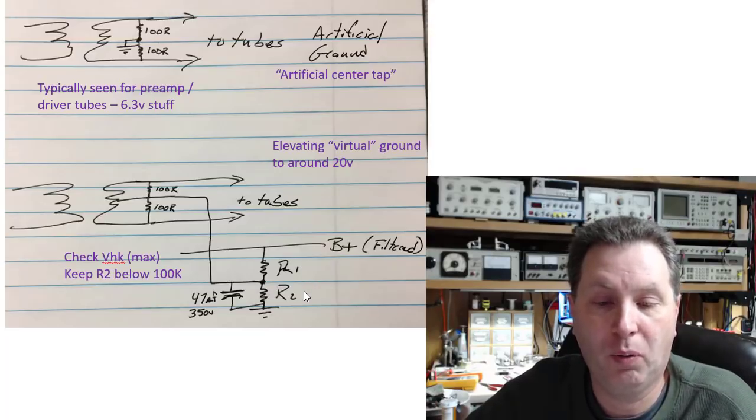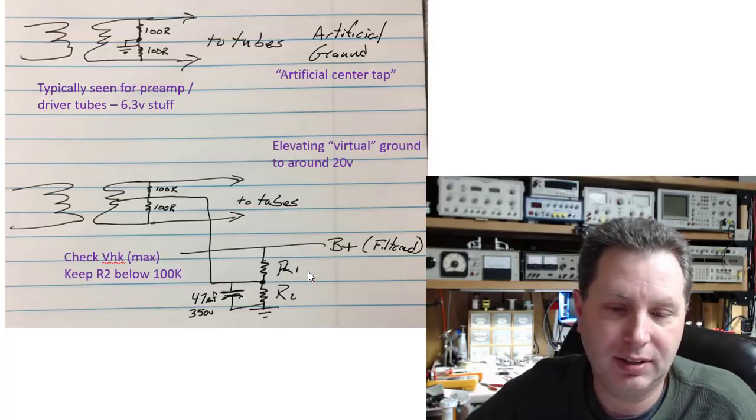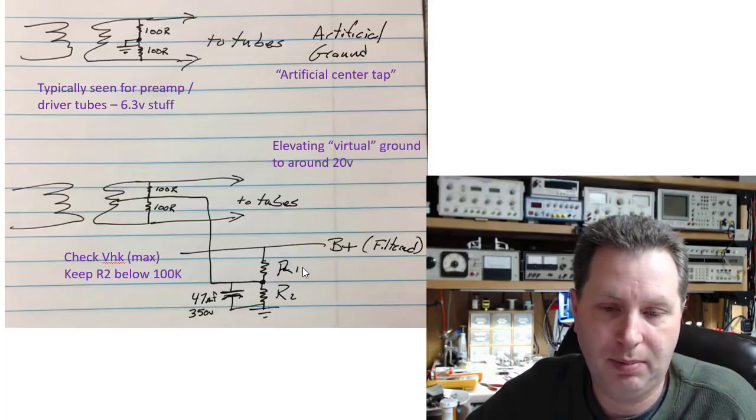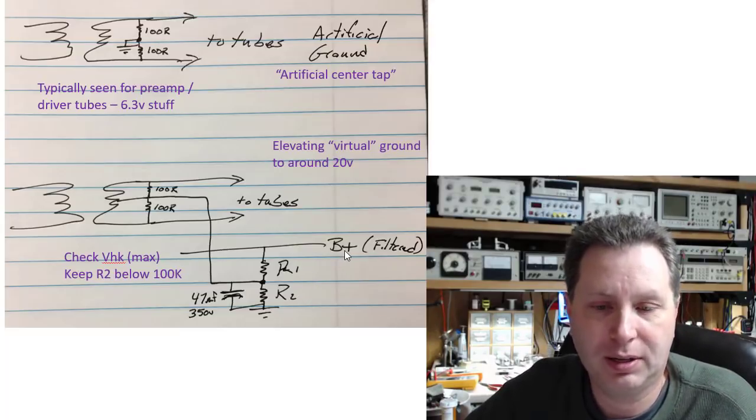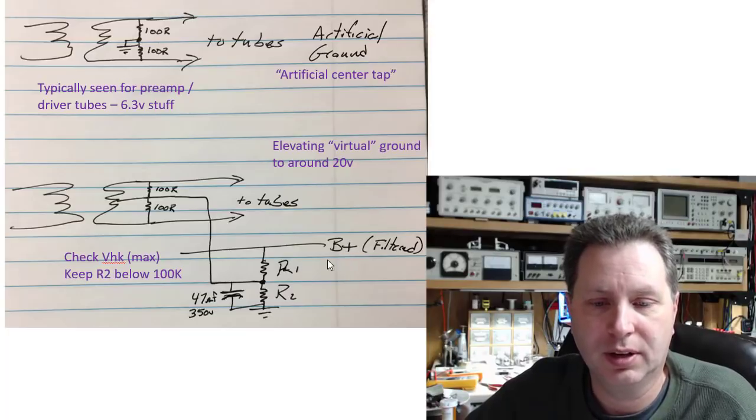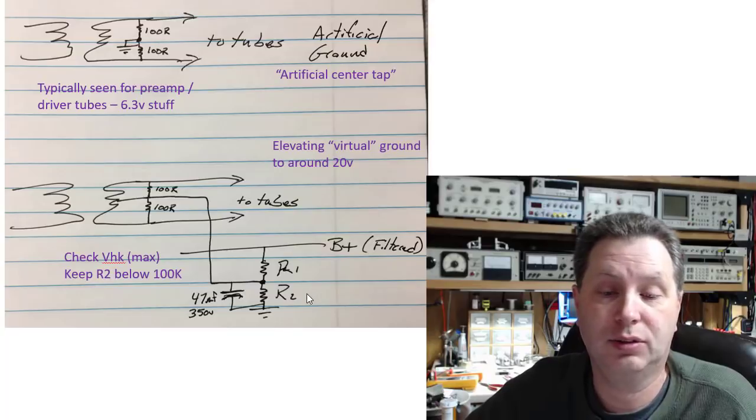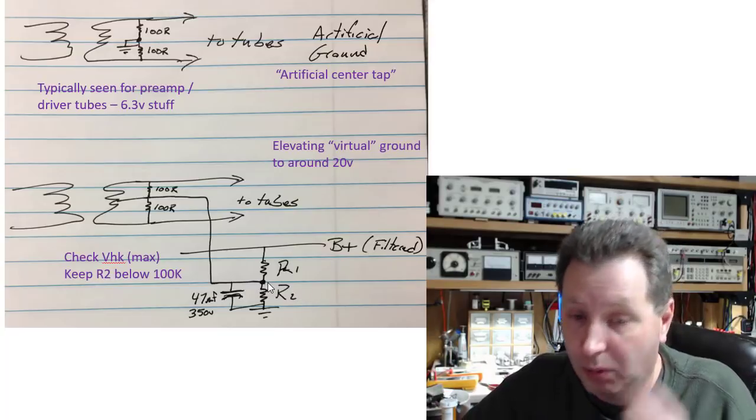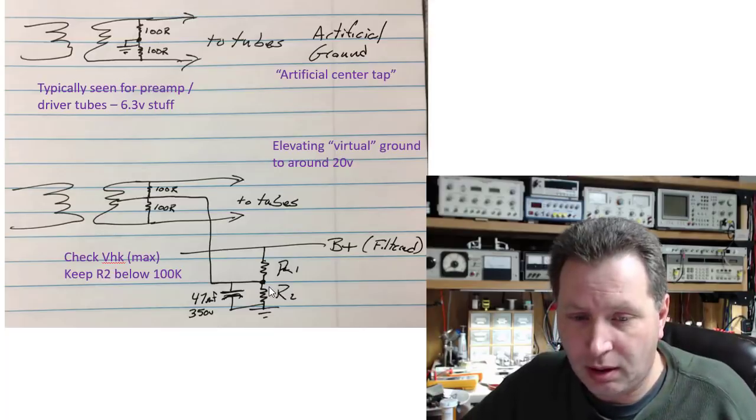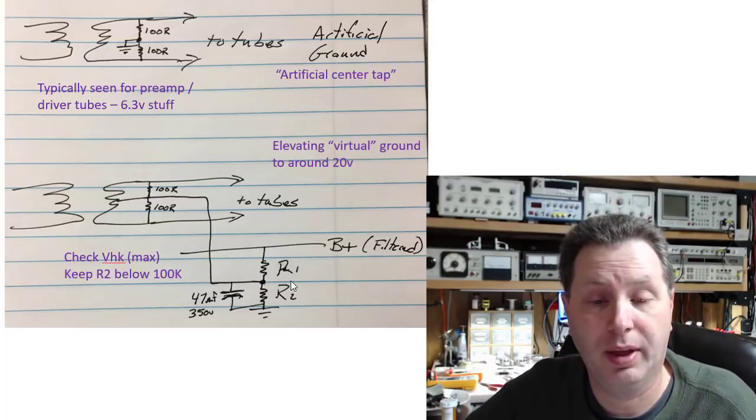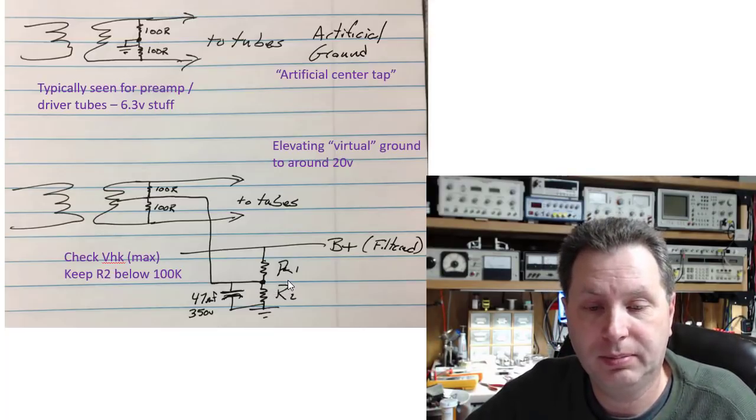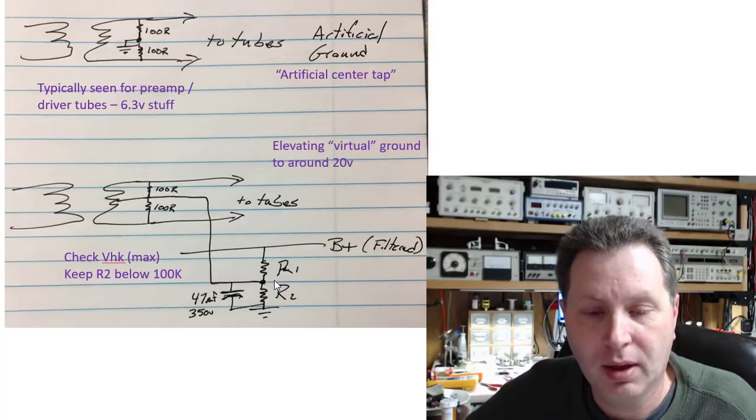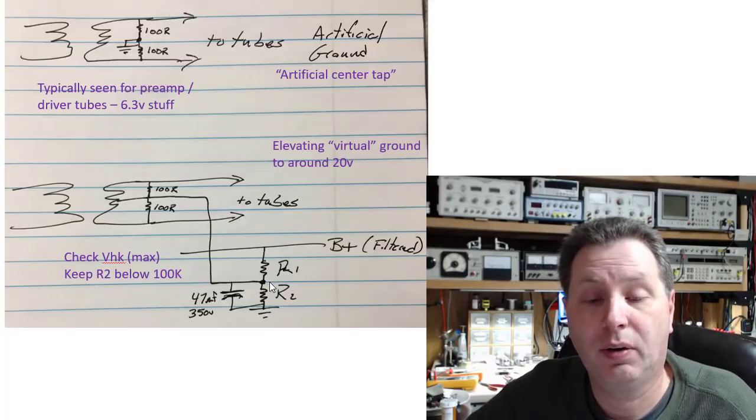I'll give you an example. Let's say your B+ was maybe 300 volts, and R1 was 280k and this one was 20k. Then you would end up with around maybe 40 volts right there sitting on that. Or actually 20 volts, I'm sorry. You'd end up with 20 volts sitting right here.